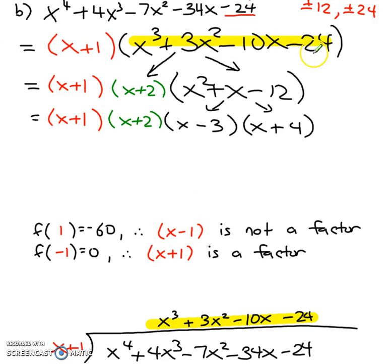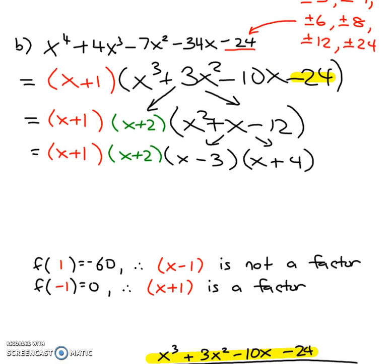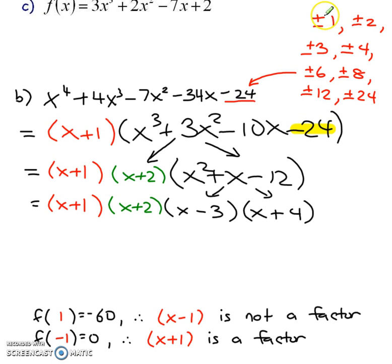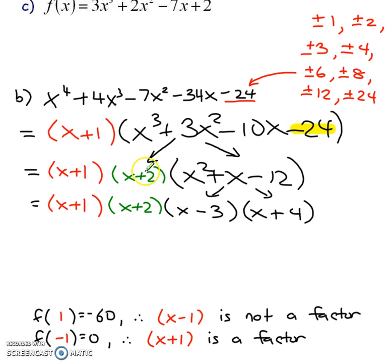I don't know right away how to break this cubic down further, so I'm going to have to do long division again. Take all the numbers that divide into negative 24 — those are our potential factors. I tried positive 1 and negative 1 into the cubic, but those didn't work. So I tried positive 2 and negative 2, and negative 2 actually worked. When I put negative 2 into each of the terms it all added up to 0, so x plus 2 is a factor — that's my second factor.